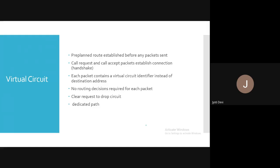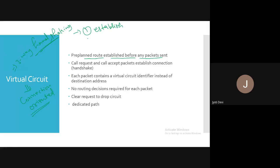Virtual circuit means it is a pre-planned route established before any packet is sent. The meaning of that is connection-oriented. First you establish the connection, then you send the data — it works on three-way handshaking. First you establish the connection, then you transfer the data, then you release the connection.